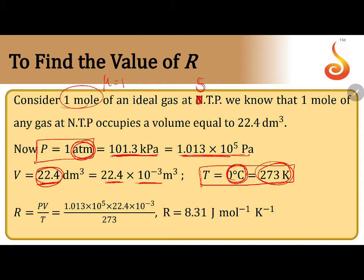You need to substitute all of this in the ideal gas equation, that is PV equals nRT, or R equals PV divided by nT, where number of moles is 1.